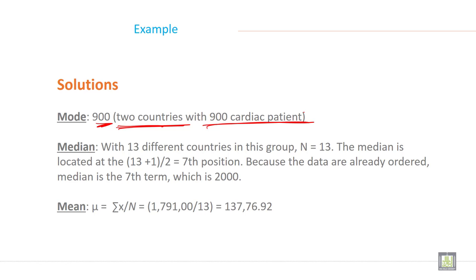Median, with 13 different countries, because total 13 countries is given in the previous slide. So their n is equal to 13. The median is located at, now what is the next step? Calculate n plus 1 by 2. So 13 plus 1 by 2.